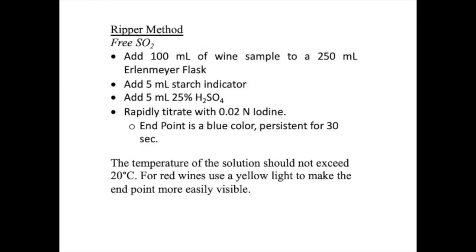For the free SO2 measurement using the Ripper method: add 100 mL of a wine sample to a 250 mL Erlenmeyer flask. Then add 5 mL of starch indicator, followed by 5 mL of 25% sulfuric acid. Rapidly titrate with 0.02 normal iodine to an endpoint of a blue color that persists for about 30 seconds. It will be easy with a white wine but more difficult with a red wine — you may need to use a yellow light behind the red wine to make the color change visible. The temperature of the wine solution should not exceed 20 degrees centigrade.